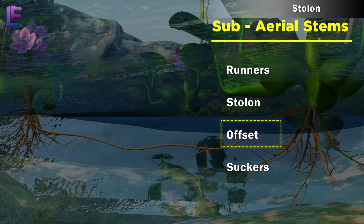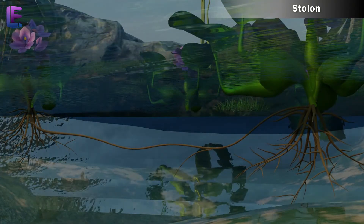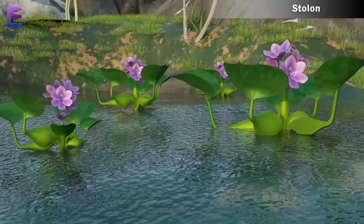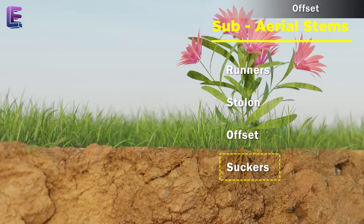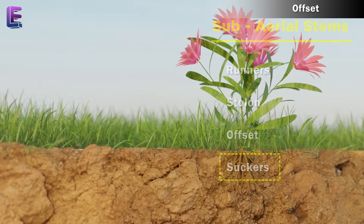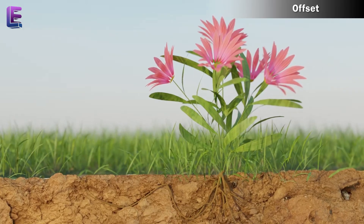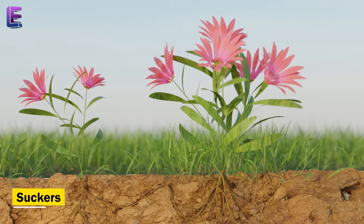C. Offset: In some aquatic plants, lateral branches called offsets arise from the same internodes. At the internode, they form leaves in a rosette form. D. Suckers: In chrysanthemum, the lateral branches originate from the basal and underground portion of the main stem, grow horizontally beneath the soil and then come out obliquely upward. These are called suckers.